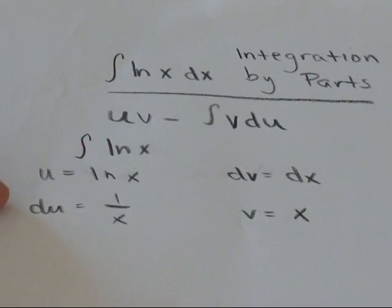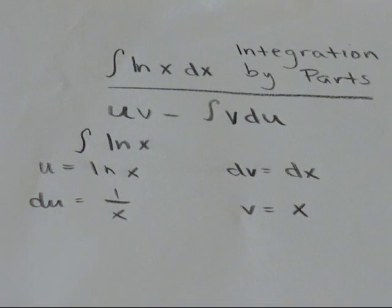Because log x, when you take its derivative, becomes simpler. It becomes 1 over x.